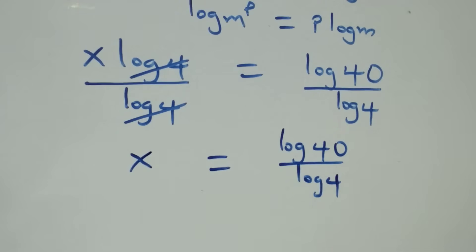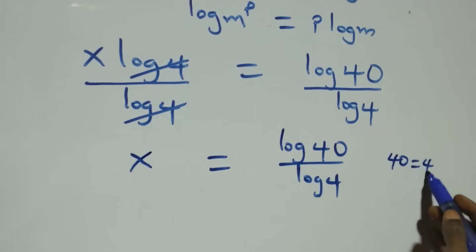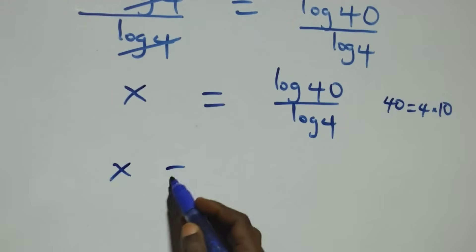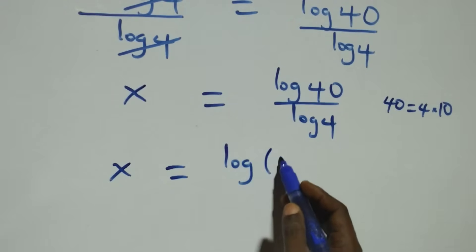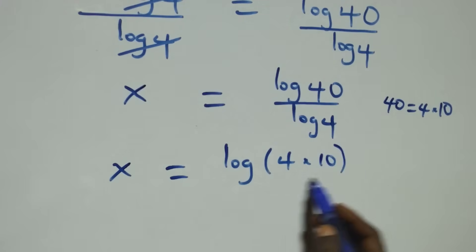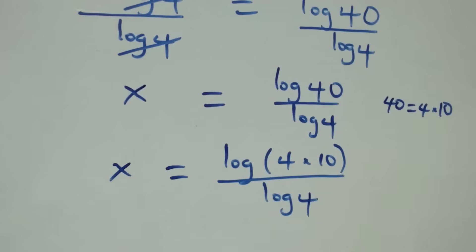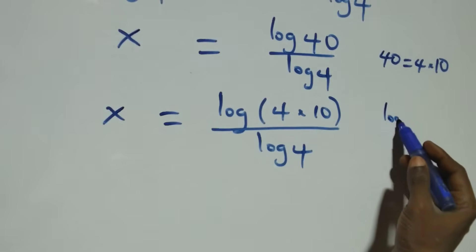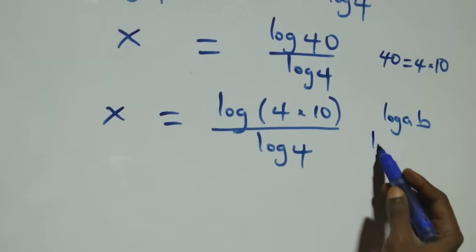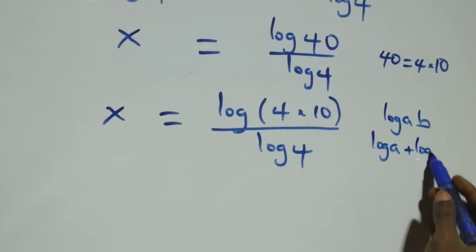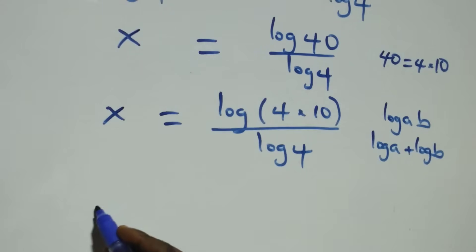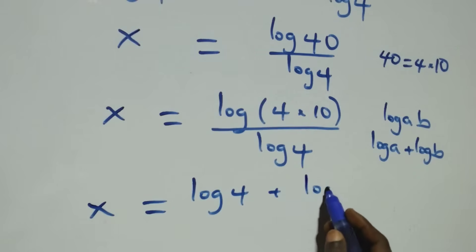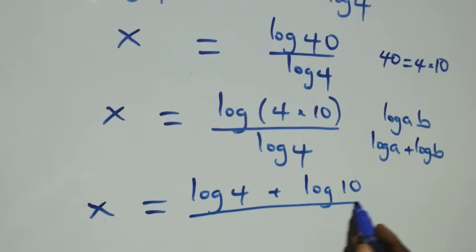We can rewrite 40 as 4 times 10, so x equals log(4 times 10) over log 4. This follows the law of logarithm: log(a times b) is the same as log a plus log b. So x equals (log 4 plus log 10) over log 4.